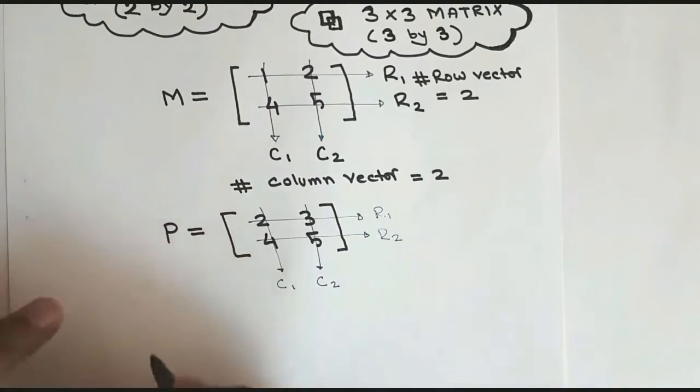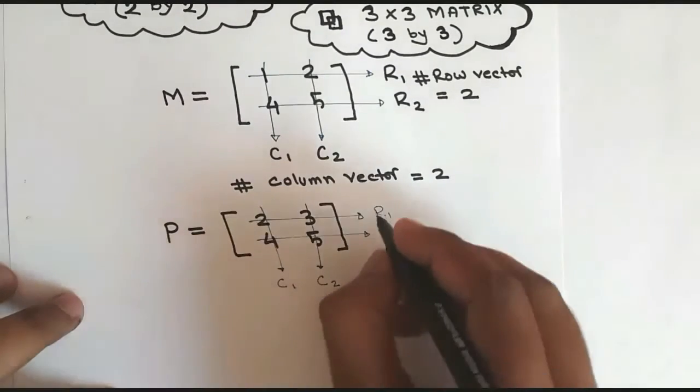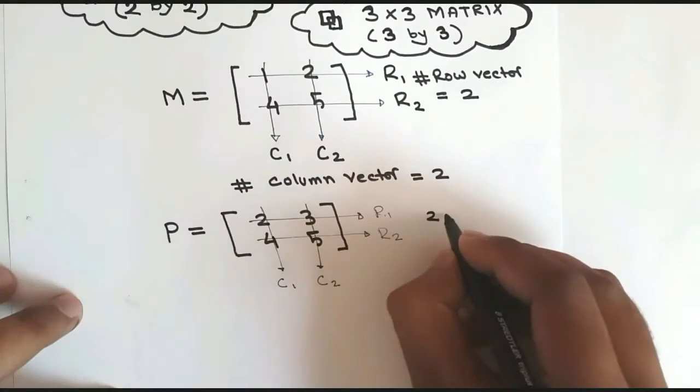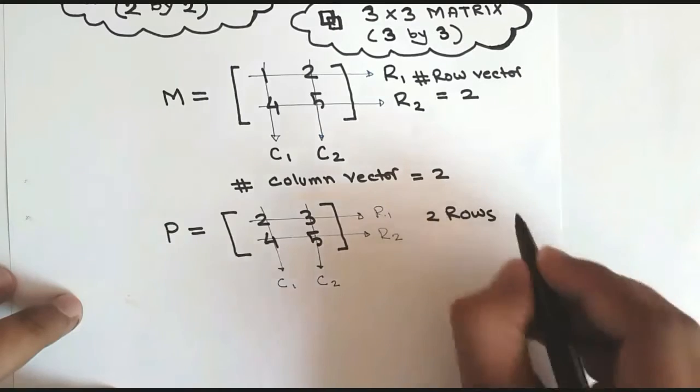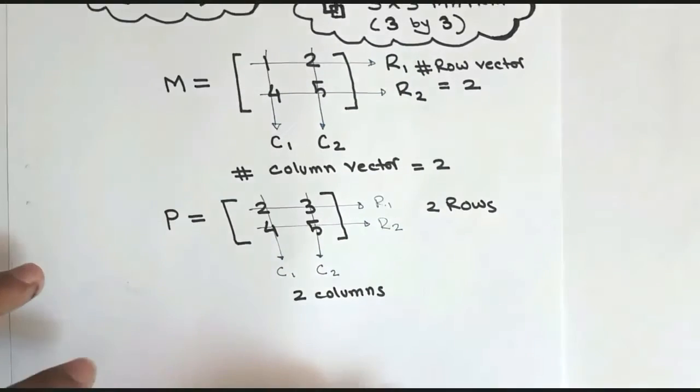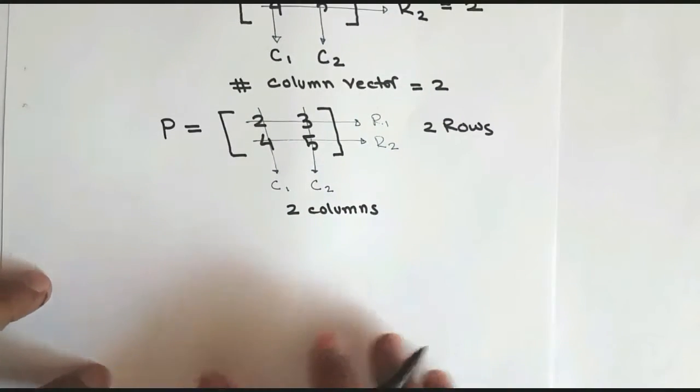So X-axis, we have two X-axis, that means we have R1 and R2, we have two row vectors, and we have two Y-axis, column 1 and column 2, two column vectors.